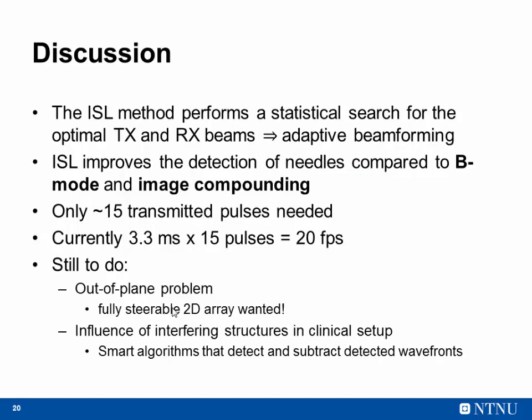The image source localization method performs a statistical search for the optimal transmit and receive beams, and in that way can be described as an adaptive beamforming algorithm. It provides better detection than standard B-mode or image compounding. In theory it could run in almost real time — the current C++ implementation with multi-core but no GPU can process one beam in 3.3 milliseconds, which is around 20 frames per second. Remaining challenges include the out-of-plane problem, though there is no fundamental limitation preventing the method from being applied in 3D, and the next step is to test it in a clinical setup.